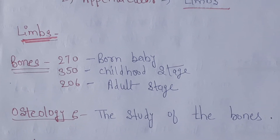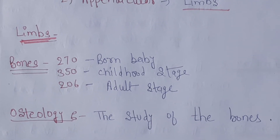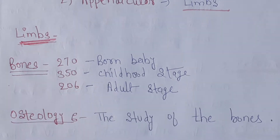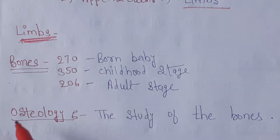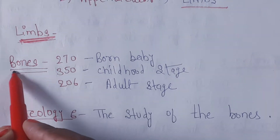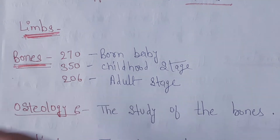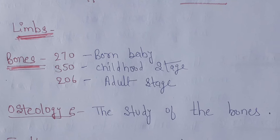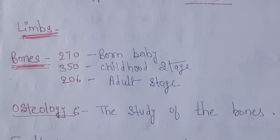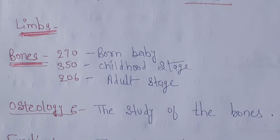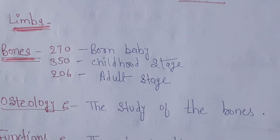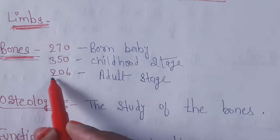How many bones are present in our body? In the human body, there are a total of 206 bones.